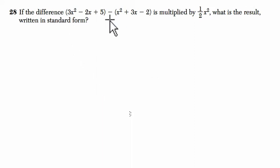Okay, so we've found the difference between these two trinomials, and we're multiplying it by a half of x squared. So we have 3x squared minus 2x plus 5 minus x squared plus 3x minus 2. Let's do that first.